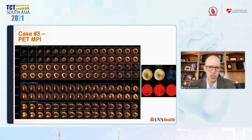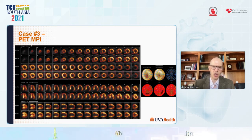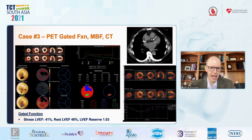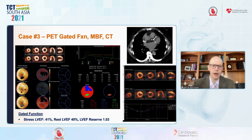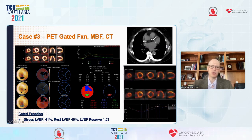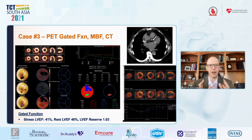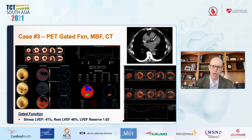He has a dilated ventricle consistent with known left ventricular dysfunction. There is some decreased counts in the septal wall — likely attenuation in a larger gentleman — but there is a reversible defect in the inferior wall corroborated by the database, though not a dramatic finding. On gated imaging, the EF reserve was slightly greater than one. CT attenuation correction images showed multi-vessel calcium. Absolute myocardial blood flow showed stress flow markedly reduced below two in all coronary territories with decreased coronary flow reserve — telling a very different story from the relative perfusion images.